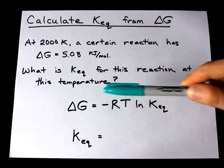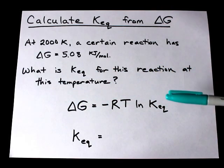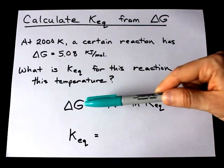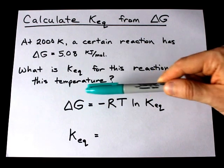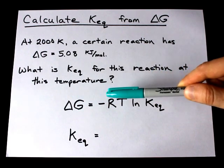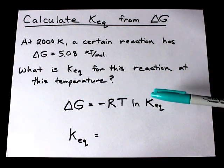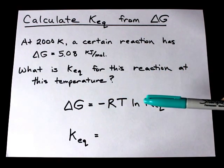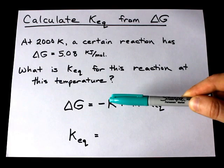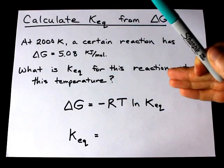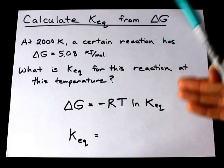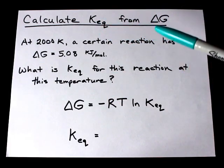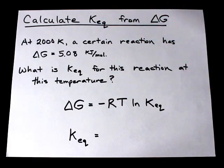Delta G is related to KEQ via delta G equals negative RT ln K, where T is the temperature in Kelvin and R is the gas constant, which if you're doing a question like this you should be familiar with.